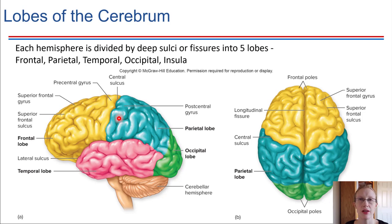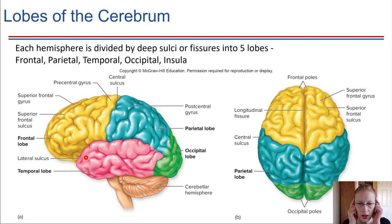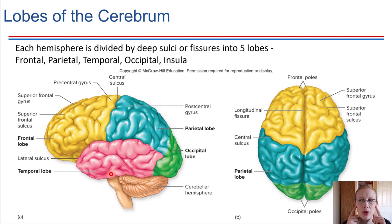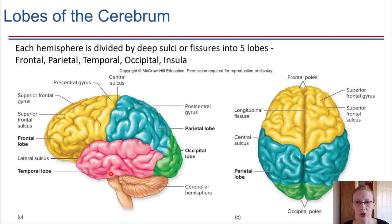Moving on to the sides, we have the temporal lobes. The temporal lobes on the sides of your head are where our auditory sensations get recognized. When you hear something, the temporal lobe of the brain is right nearby your ears — it's like a really quick path for hearing.